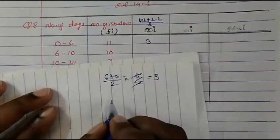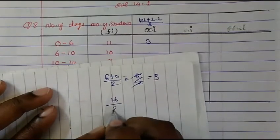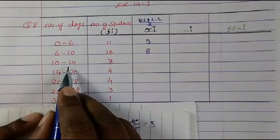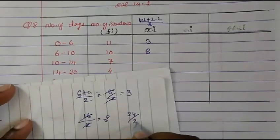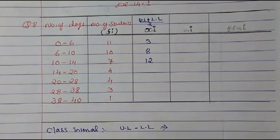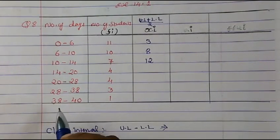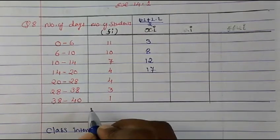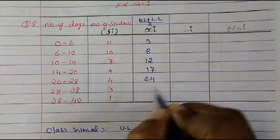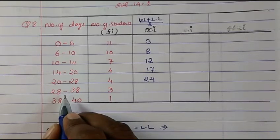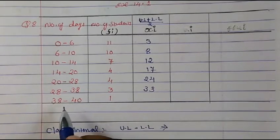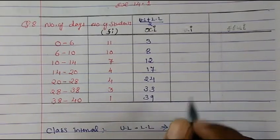Next: (6 + 10) / 2 = 16/2 = 8. Then (10 + 14) / 2 = 24/2 = 12. Then (14 + 20) / 2 = 34/2 = 17. Then (20 + 28) / 2 = 48/2 = 24. Then (28 + 38) / 2 = 66/2 = 33. And (38 + 40) / 2 = 78/2 = 39.